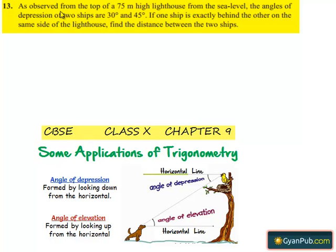Moving on to the 13th question. As observed from the top of a 75 meter high lighthouse from the sea level, the angles of depression of two ships are found to be 30 degrees and 45 degrees. If one ship is exactly behind the other on the same side of the lighthouse, find the distance between the two ships.